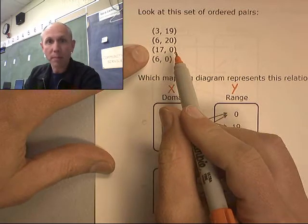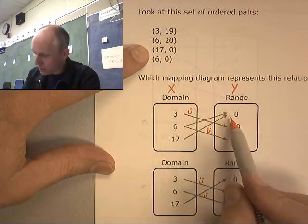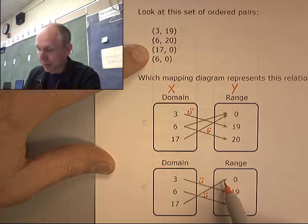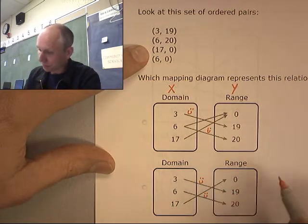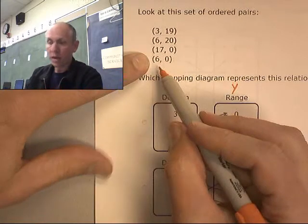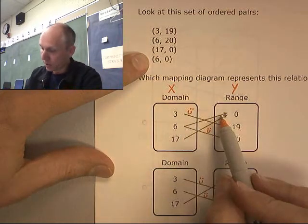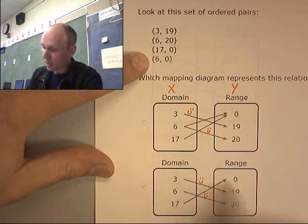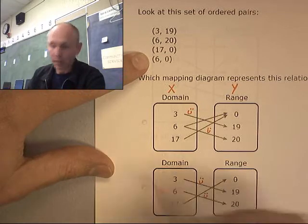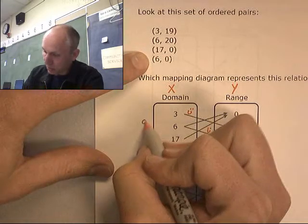Here's 17 mapping to a 0. 17 mapping to a 0. Yep, that one works again. So far, we're good. Now, I have a 6 mapping to a 0 also. Here's 6 mapping to a 0. And this one, well, he doesn't have that mapping. So this is not the correct one. This must be the right one. Here we go. So, not too bad.